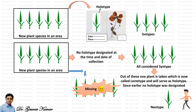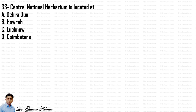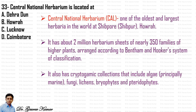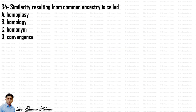Next question: the Central National Herbarium is located at Shibpur near Howrah. It is one of the largest and oldest herbaria in the world, with about 2 million herbarium sheets of nearly 350 families of higher plants, arranged according to the Bentham and Hooker system. It also has cryptogamic collections including marine algae, fungi, lichens, bryophytes, and pteridophytes. The correct option is Howrah.